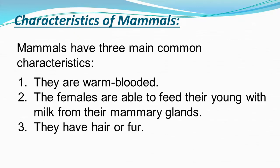Mammals have mammary glands in their body which help them feed their young with milk. They also have hair or fur on their body. These 3 main characteristics allow us to easily distinguish the mammals.